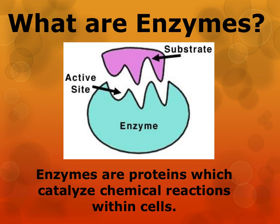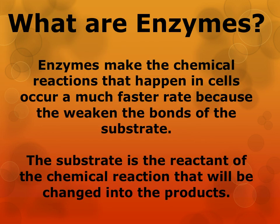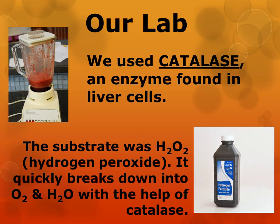So what are enzymes? Enzymes are proteins which catalyze chemical reactions within cells, which means they speed them up. Enzymes make chemical reactions that happen in our cells occur at a much faster rate because they weaken the bonds of the substrate. And remember, the substrate is the reactant of the chemical reaction that will be changed into the products after the reaction is complete. In the lab done in class, you were focusing on breaking down hydrogen peroxide. The enzyme used was catalase, which is found in liver cells. That makes hydrogen peroxide the substrate.